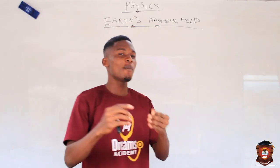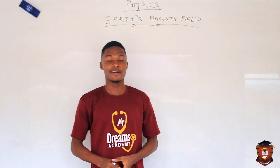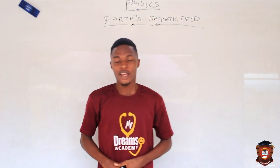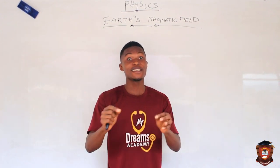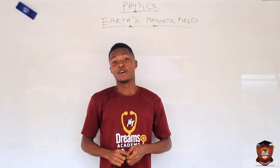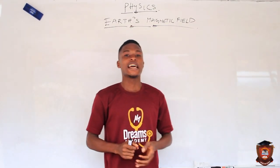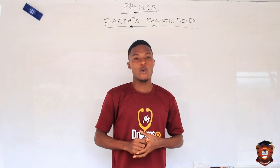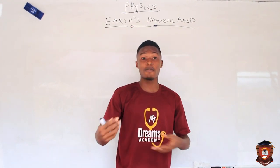Many of you may be asking yourselves: does Earth have a magnetic field? Well, yes it has a magnetic field, and of course that is one of the reasons why we are still alive today. Now you're asking: how does Earth's magnetic field keep us alive? For you to understand that concept you need to know what we call a solar wind. Now a solar wind is actually a stream of particles.